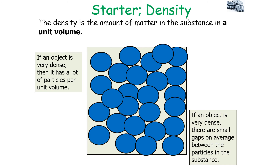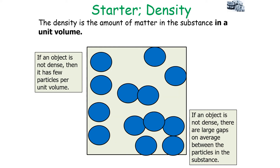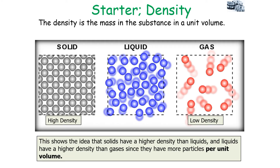As mentioned previously, an object's density links to its particles and mass. An object is very dense if it has lots of particles per unit volume, and not very dense if it has few particles per unit volume. This shows that solids have a higher density than liquids and gases because they have more particles per unit volume, or equivalently, a smaller space between the particles per unit volume.